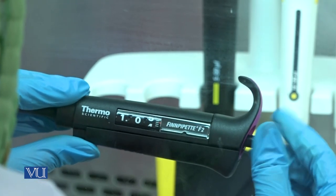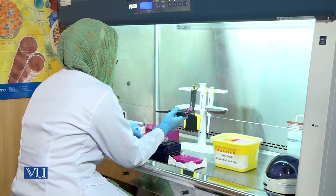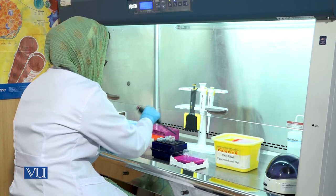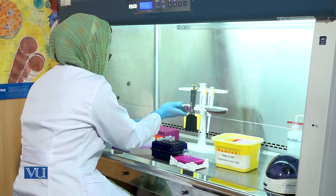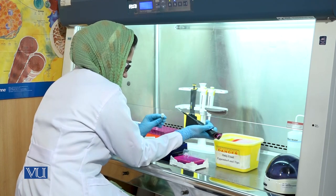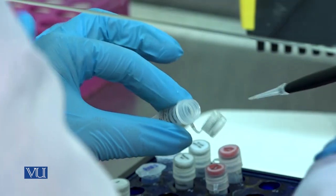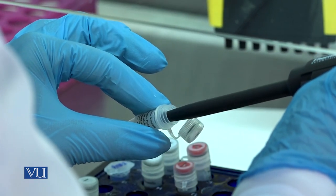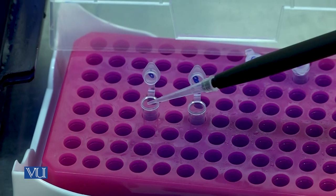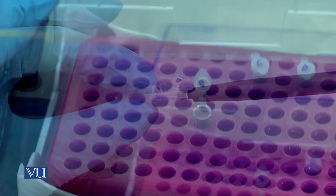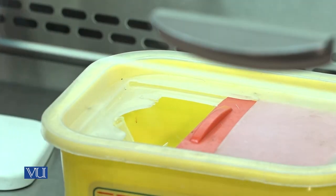Now set the micropipette to 1 microliter. Take 1 microliter of random primer and transfer it into the PCR tubes. Discard the used tip in the waste box.